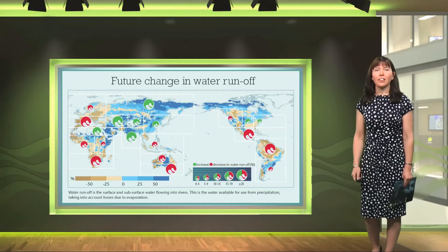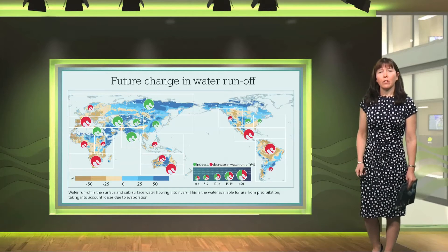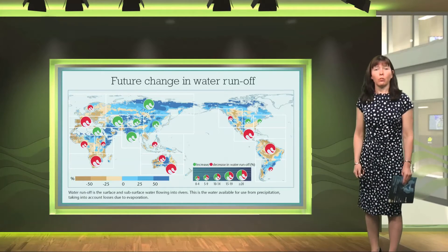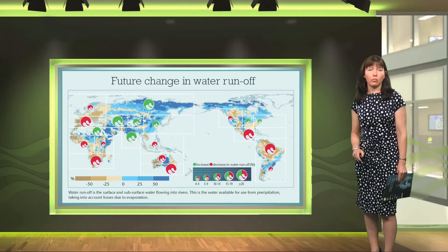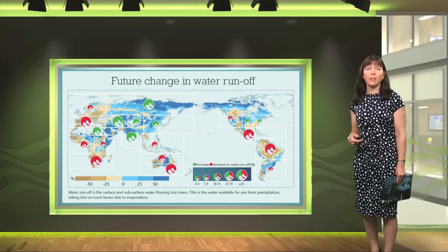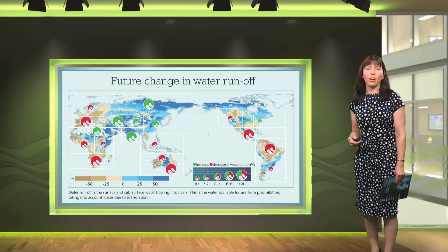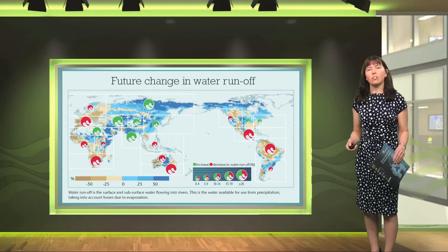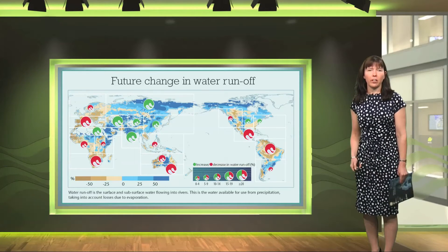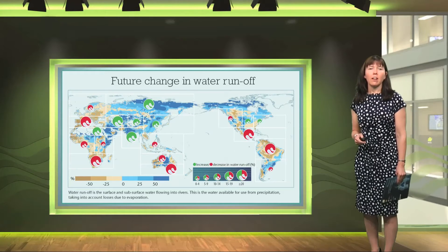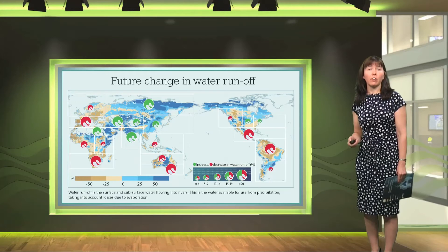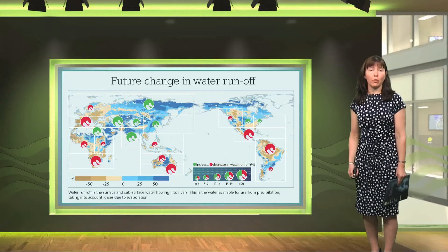The first map in the top left hand corner of the poster shows a future change in water runoff. Runoff is the water that's available for use from rainfall, taking into account anything that's lost due to evaporation. This is a critical value for water security, and with changes in weather patterns there are some regions that will see an increase in runoff while others a decrease, as shown on the map.